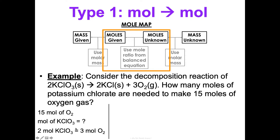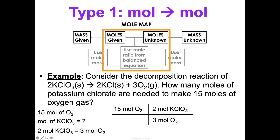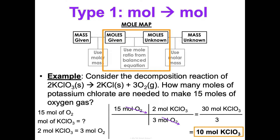Now we're ready to assess and actually plug this in. We start with what we know: 15 moles of oxygen. Draw your picket fence. We always put like units on opposites so they'll cancel out. So three moles of oxygen is equal to two moles of potassium chlorate. That gets me where I want to go. Now we can simply multiply across: 15 times two gives me 30, over three. 30 divided by three gives me 10 moles of potassium chlorate.